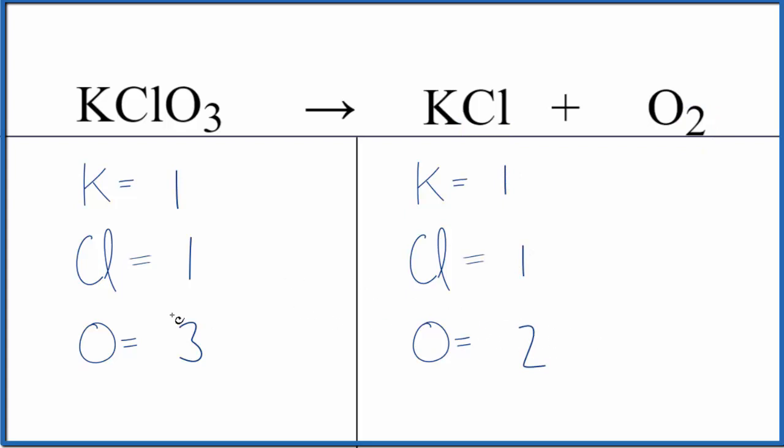Probably the best thing to do when we have this odd number of oxygens here, let's multiply that by two. So our coefficient of two, that'll make this an even number. Three times two, that gives us six. Then we have the one times the two, two chlorine atoms, one times two, two potassium atoms.